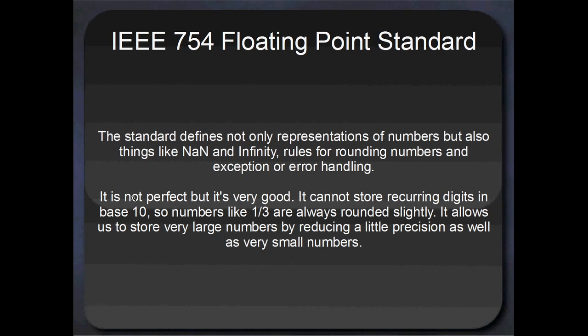So it's not perfect, but it's very good. It can't actually store recurring digits, which is one of the drawbacks. So something like one third, it's always going to round that slightly. In base 10 we would write that as 1.3 recurring, but IEEE 754 doesn't have a way of representing that. It allows us to store really large numbers by reducing the precision by a little bit, and it allows us to store really small numbers as well, but not perfectly. Some numbers it can actually store perfectly, but others it can't.